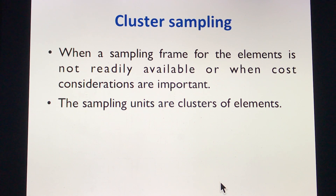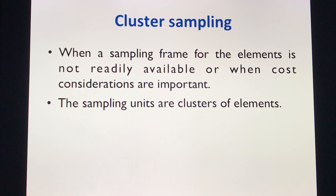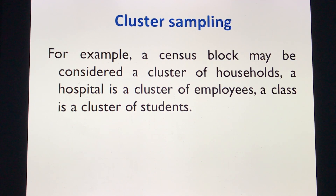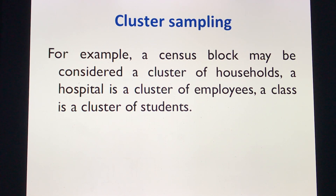Cluster sampling is used when a sampling frame for the elements is not readily available, or when cost considerations are important. The sampling units are clusters of elements. For example, a census block may be considered a cluster of households, a hospital a cluster of employees, and a class a cluster of students — such as all third-year high school students or all first-year medical students of a certain school or university.